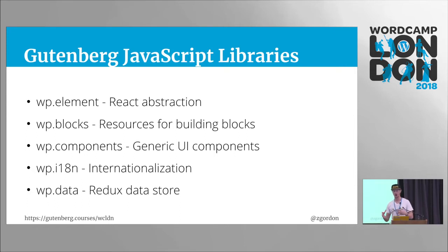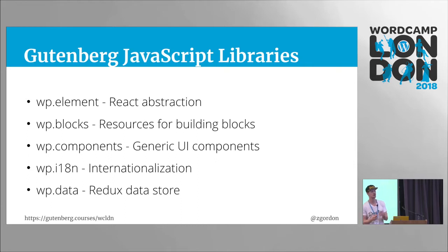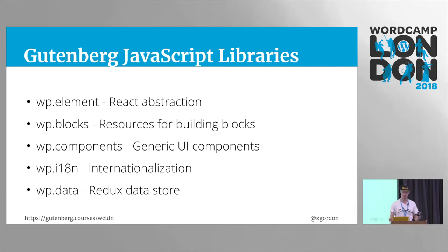Finally, we have WP Data and some offshoots of it. If you've dealt with complex JavaScript applications before, at some point you need to begin keeping track of the state of the application. You can't save every single interaction to a database or depend on AJAX calls. The core team is starting to load up a bunch of data into this automatically — so if you want the post ID or other information, you don't have to write your own queries. You can just say, hey data, give me this. And you could also create your own data stores for complex plugins.